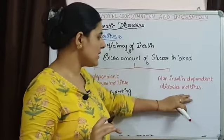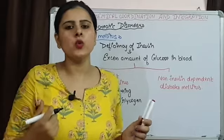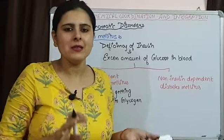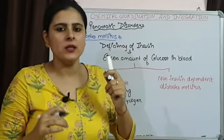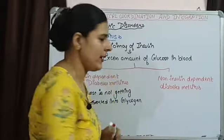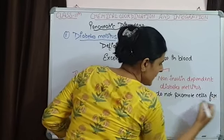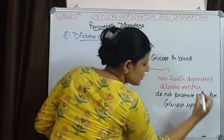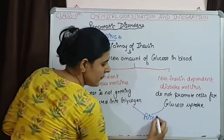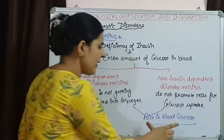In non-insulin-dependent diabetes mellitus, insulin is present in normal amounts but it does not facilitate cells to uptake glucose — it does not promote cells for glucose uptake. So if cells are not taking up glucose, the blood glucose level still increases. The result is the same but the reasons are different.